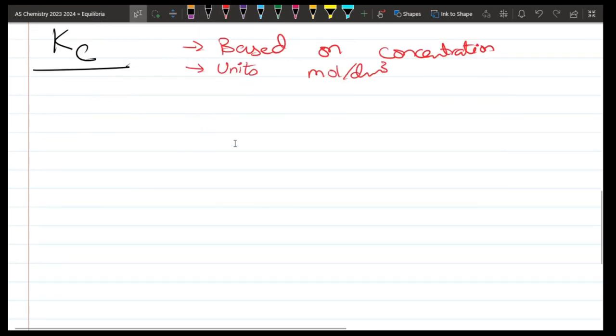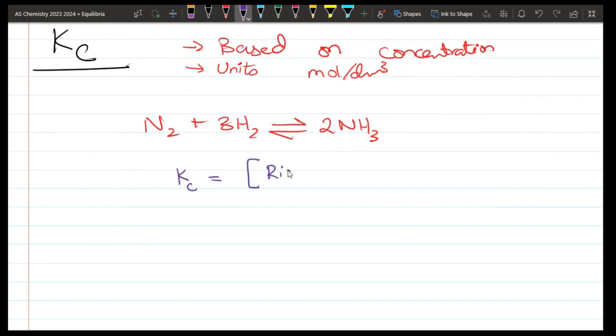N₂ plus 3H₂ gives us 2NH₃. This is a famous chemistry equation. Now you have to put square brackets: right hand side over left hand side.